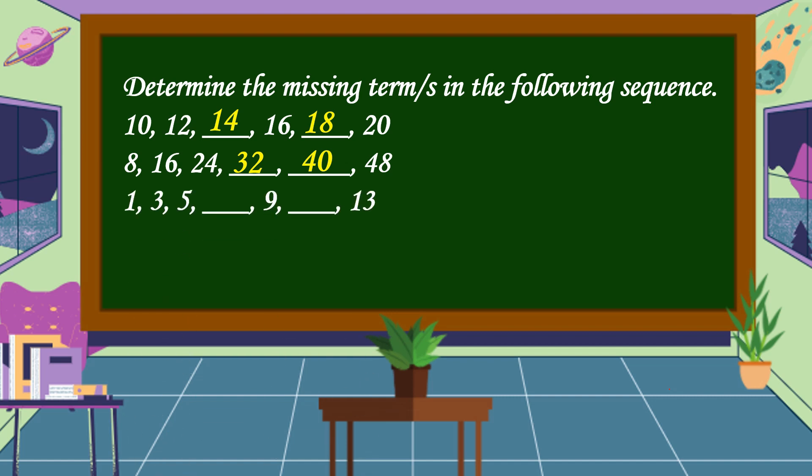Next, 1, 3, 5, blank, 9, blank, 13. What are the missing terms in this sequence? Alright, the missing terms are 7 and 11.